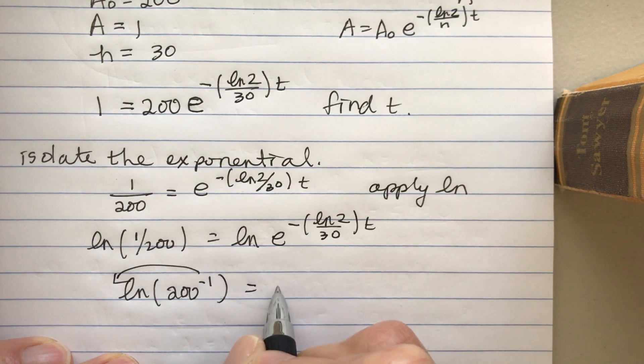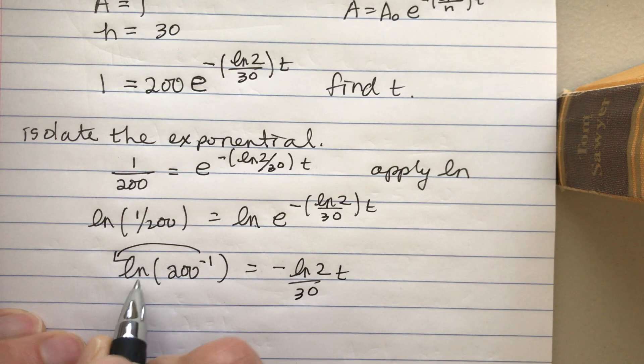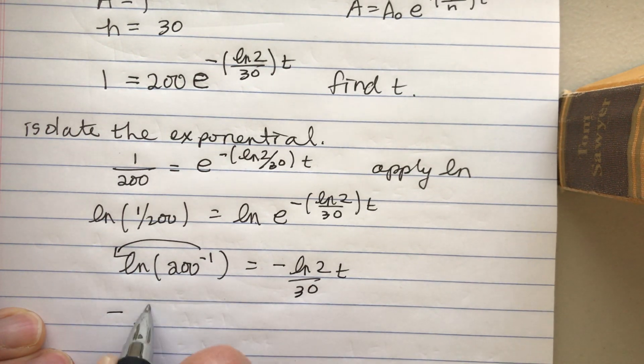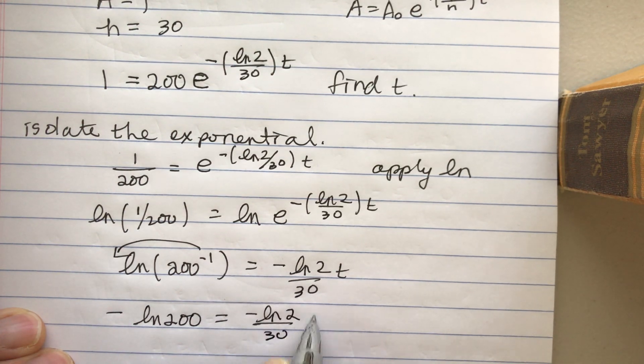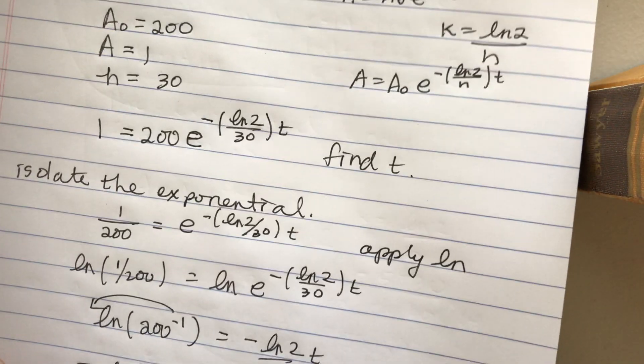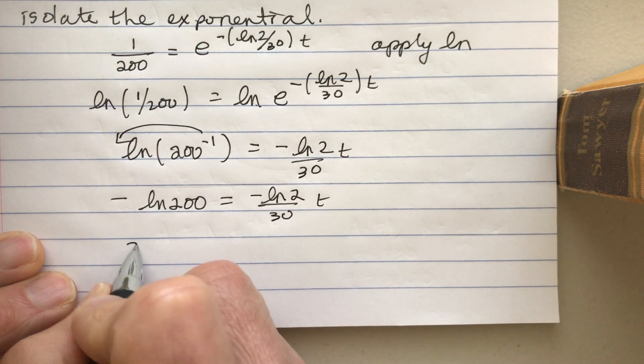When I bring that to the front, that makes it -ln(200). Then I multiply both sides by the reciprocal and the negatives cancel out.